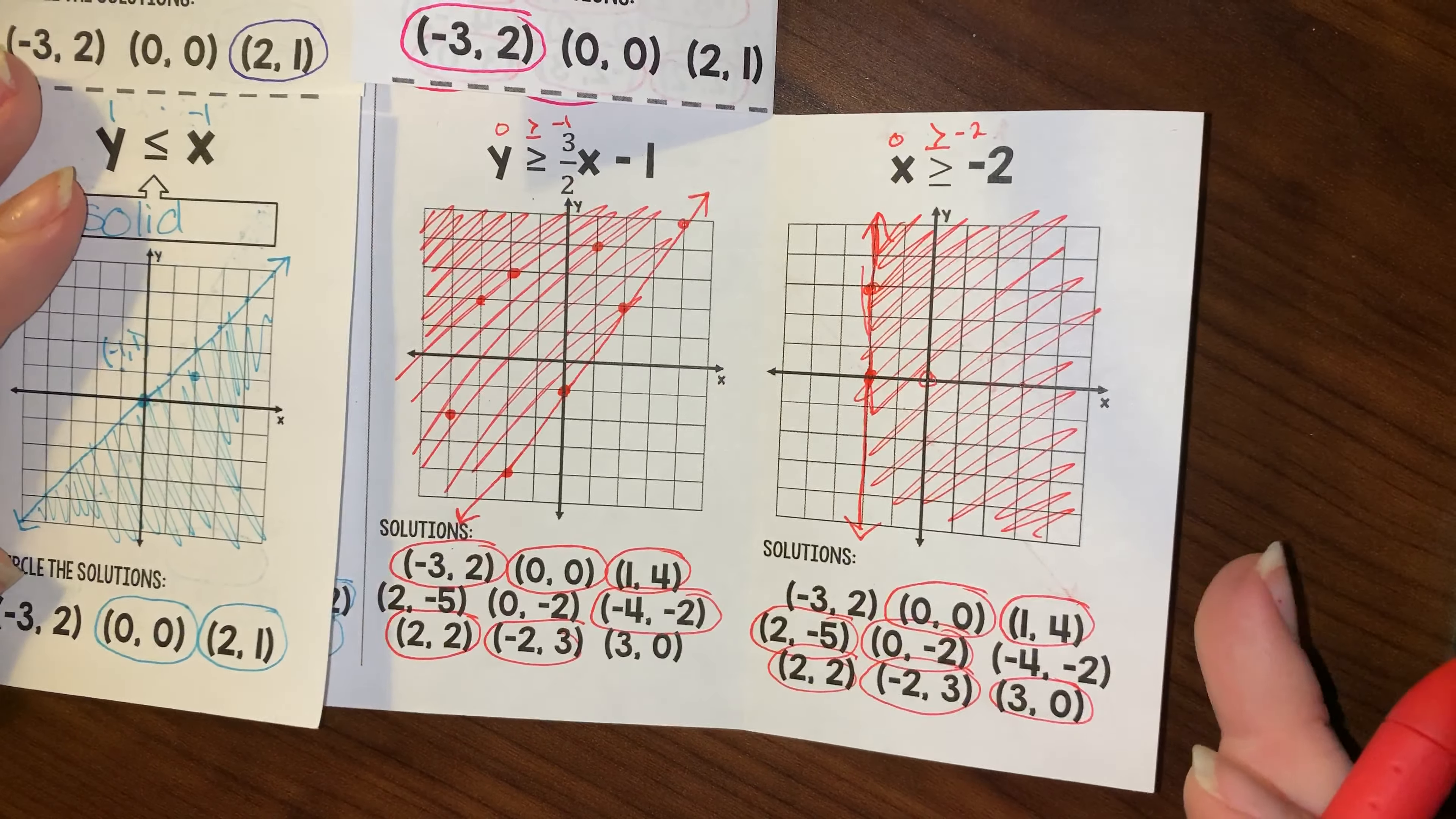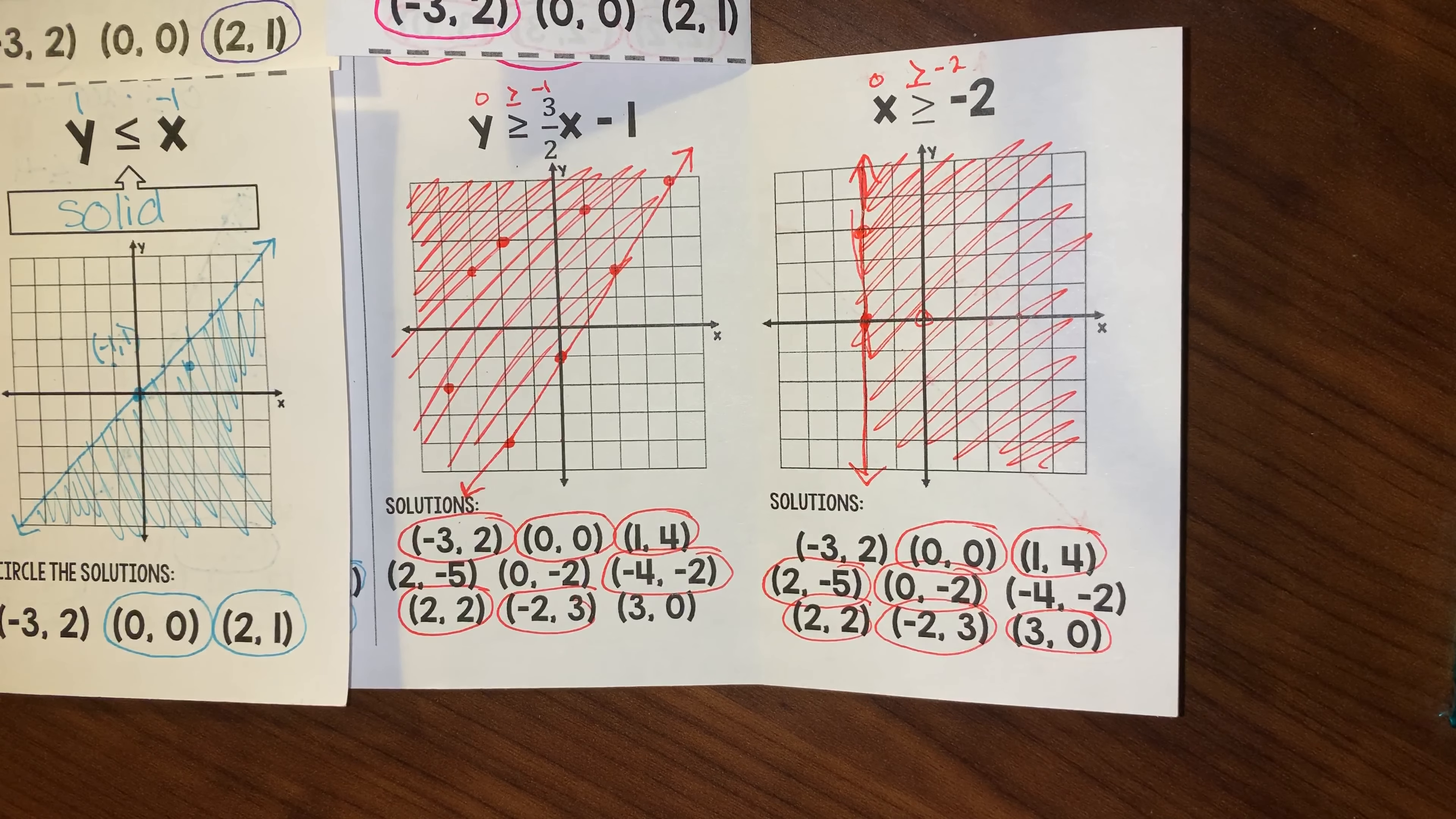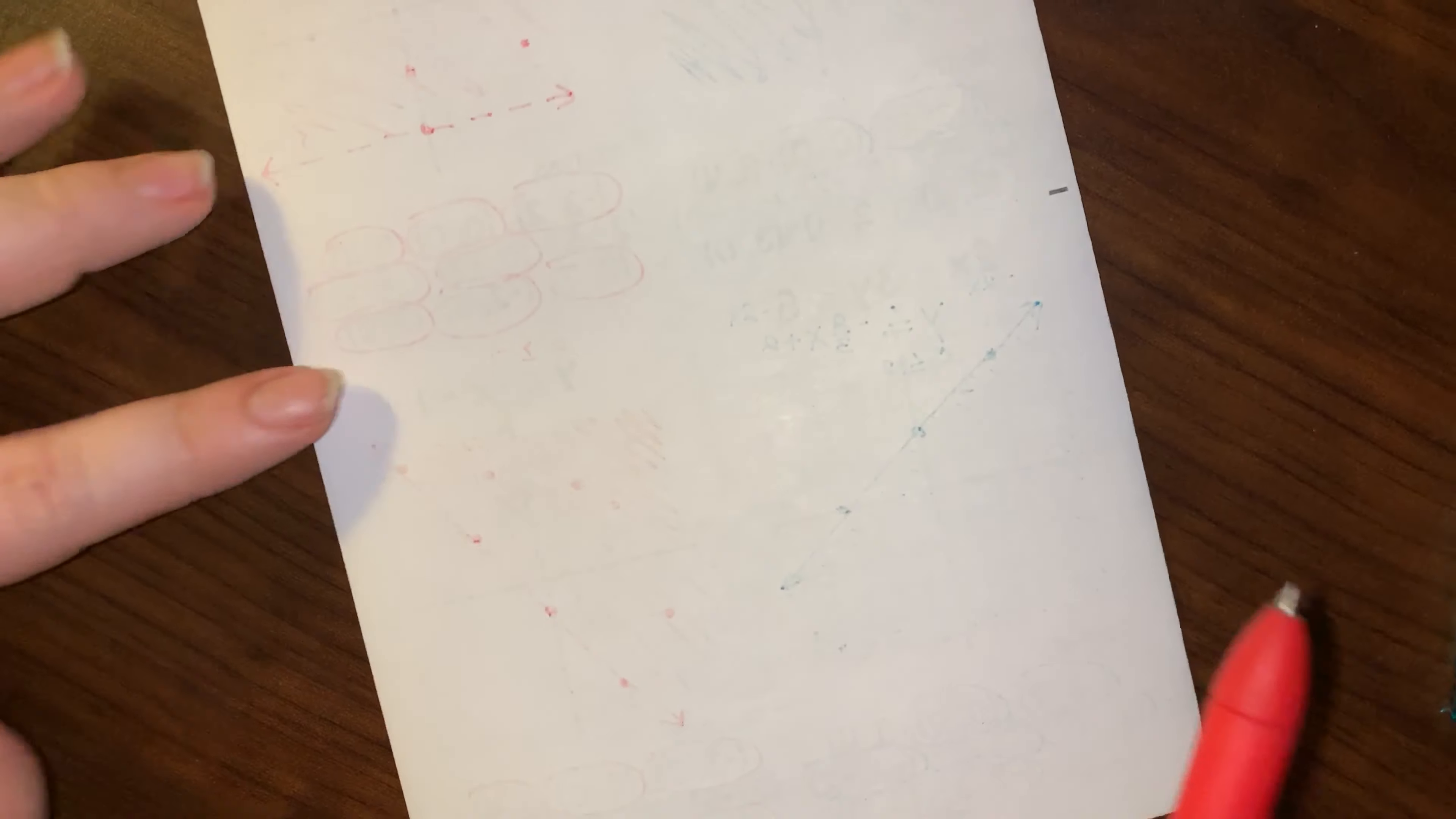All right, so there you have it. That's how you're going to graph inequalities on a coordinate grid, coordinate plane, whatever you want to call it, and then you're going to just put glue on this side and glue it into your notebook.